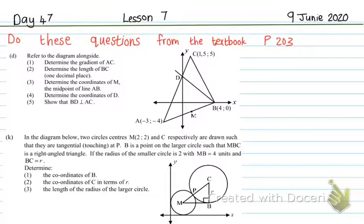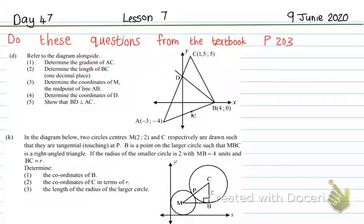Hello, Grade 10. This is your Day 47, Lesson 7 of analytical geometry — the last lesson. What you're going to do is attempt questions from the textbook's revision on page 203, numbers D and K. Quickly pause the video, do those questions, and then get back to the video for the memo.